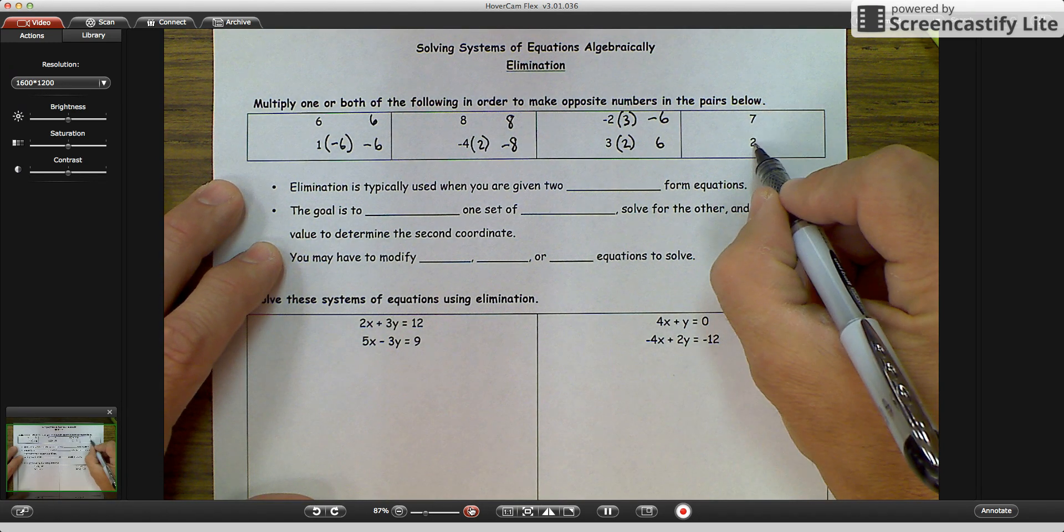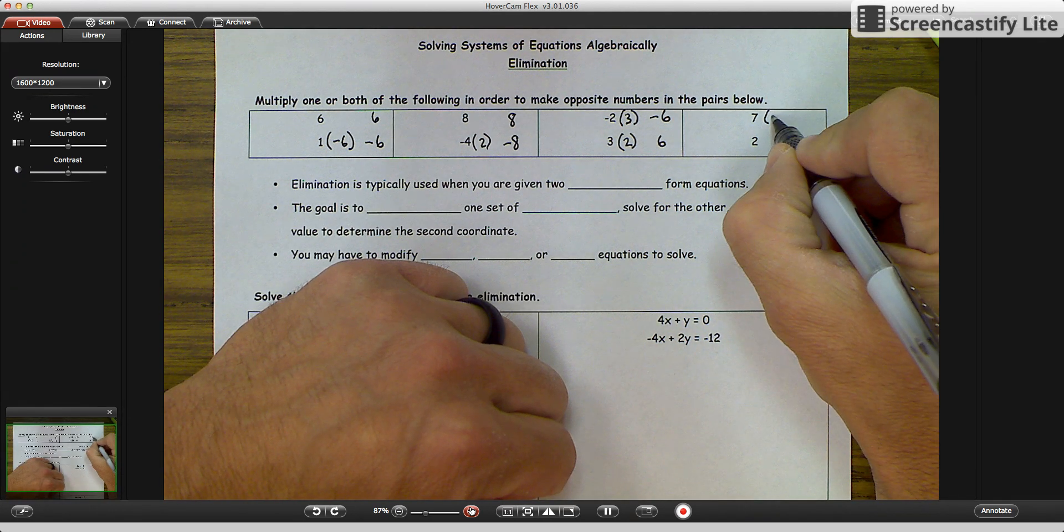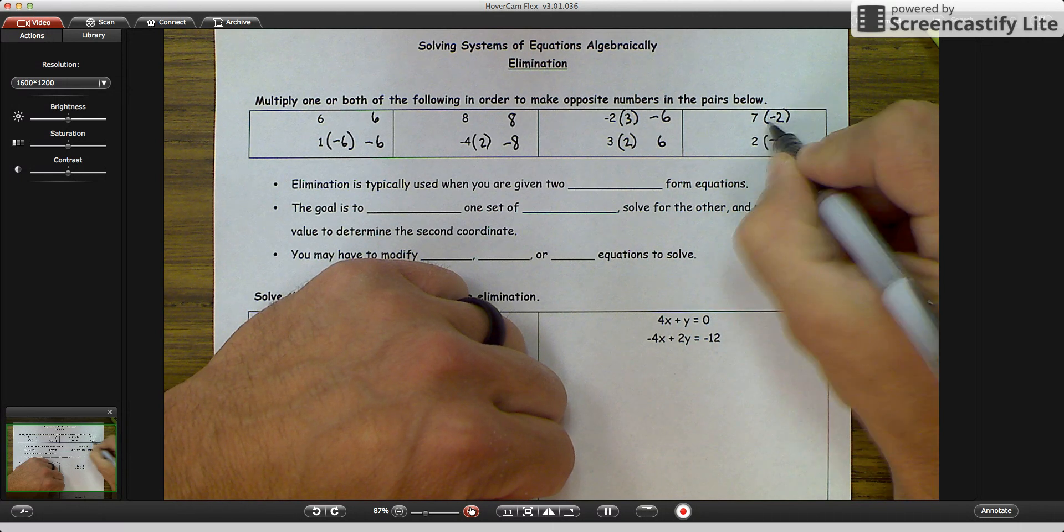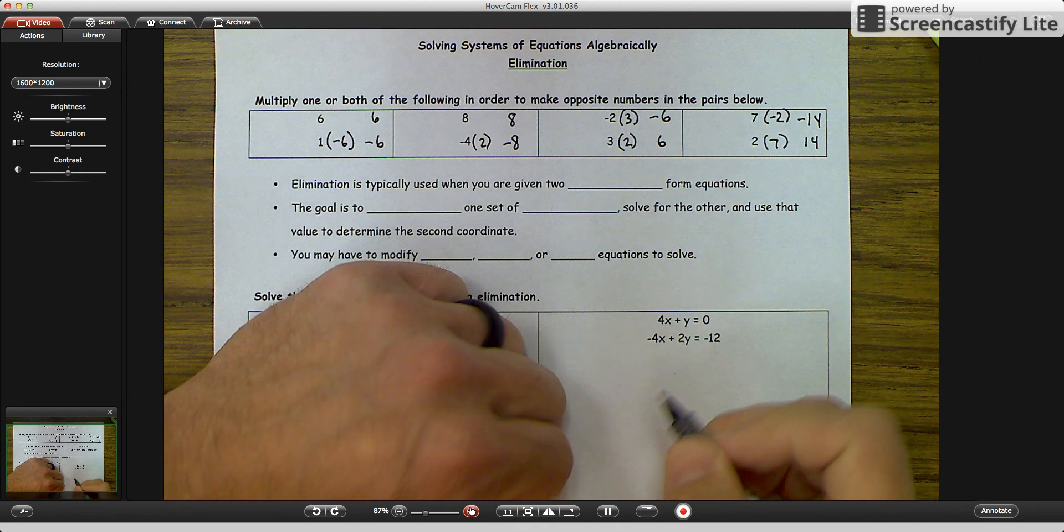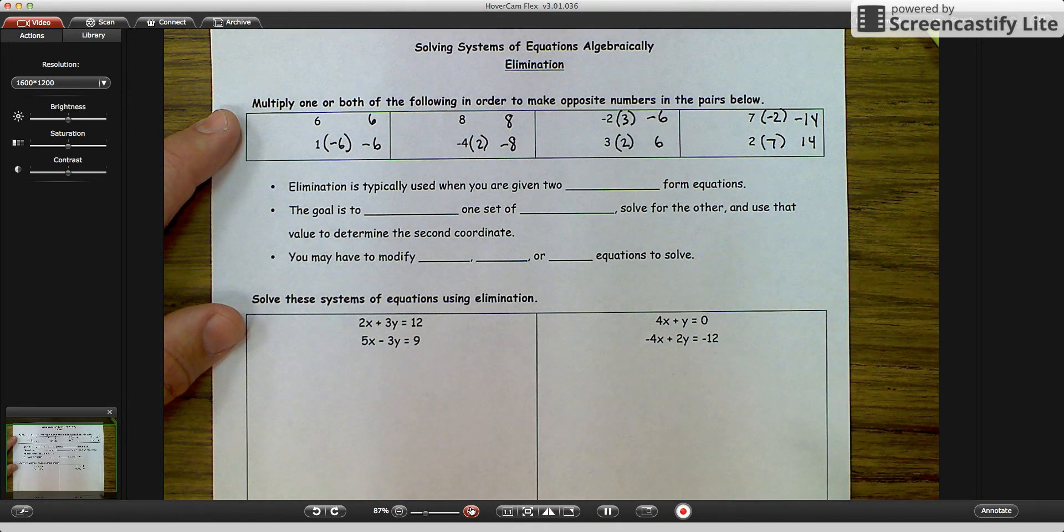And then in the last one, we have a positive 7 and a positive 2. We could multiply the top by a negative 2 and the bottom by a positive 7. And then we would get negative 14 and positive 14. And again, the ultimate goal is same number, opposite sign.